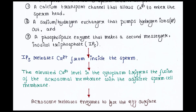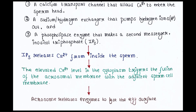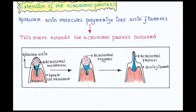The elevated calcium level in the cytoplasm triggers the fusion of the acrosomal membrane with the adjacent sperm cell membrane. You can see it here — this is the sperm cell membrane, this is the nucleus, and this is the acrosomal membrane. We can see the fusion between the acrosomal membrane and the sperm cell membrane.